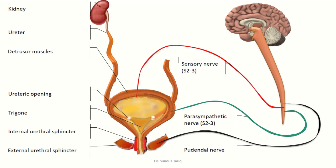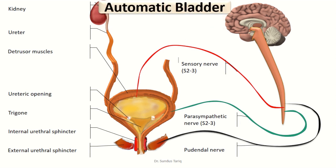The second abnormality is called the automatic bladder. As the name indicates, the bladder becomes automatic, meaning control from the higher centers is lost. This occurs when there is damage to the spinal cord above the sacral segment, while the sacral segment remains intact. Therefore, the micturition reflexes are also intact, but the conscious control of the bladder is lost.